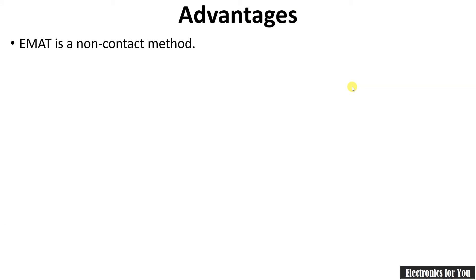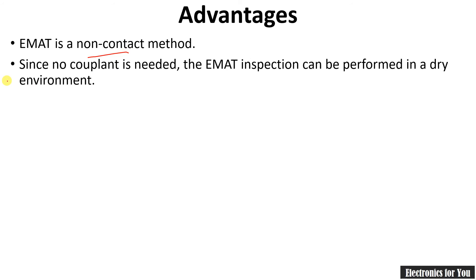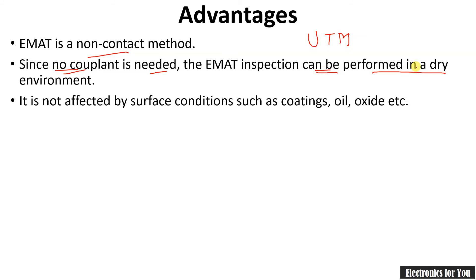Now let us see the advantages of EMAT. EMAT is a non-contact method — no couplant is required. In ultrasonic thickness measurement, a couplant is generally required, but in the case of EMAT there is no need for a couplant, so you can measure thickness in a dry environment.